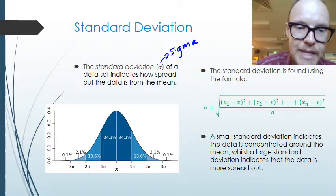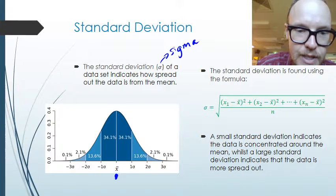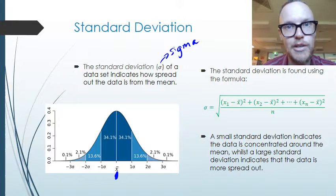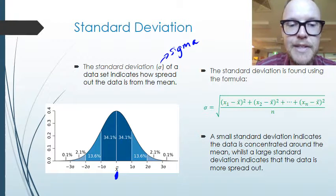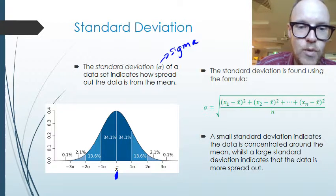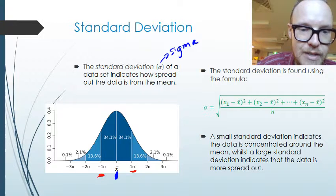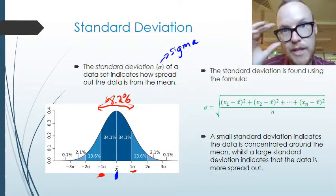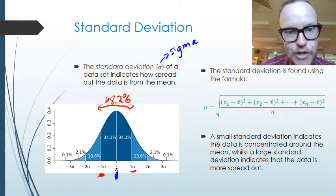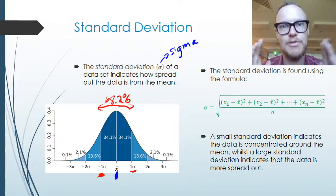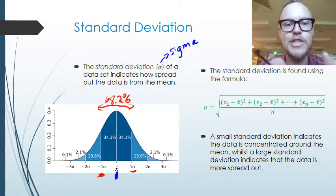If we look at where the mean sits in a set of data, with the mean in the middle, the data will be spread below and above it. This graph shows how that data is spread out. Looking at one standard deviation above and one standard deviation below, about 68.2% of all the data sits within plus or minus one standard deviation. That is the definition of what standard deviation is.